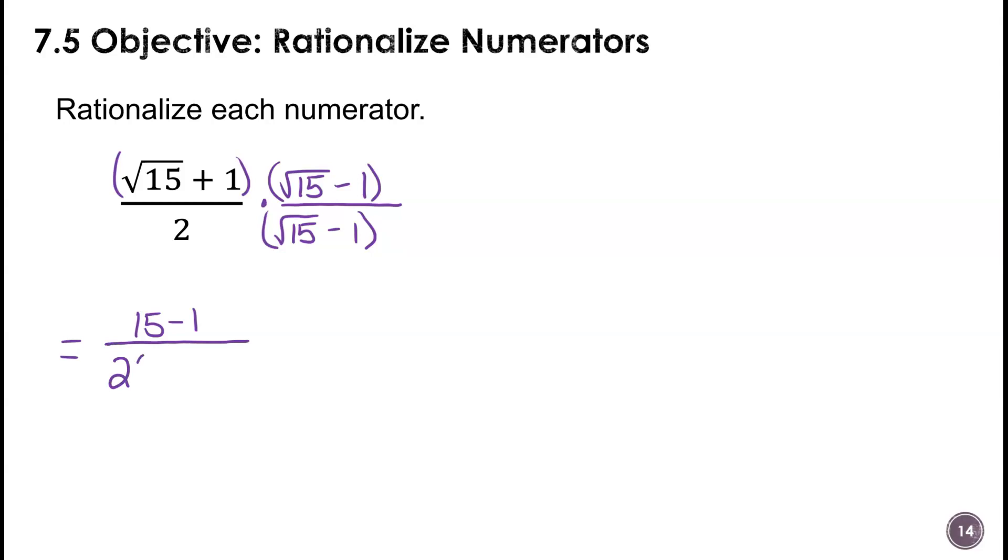So that will be 15 minus 1. I'm just going to leave this without multiplying because I can tell that it's going to simplify some more, because I'm going to have a 14 here in my numerator. So I'm going to be able to simplify by a 2.